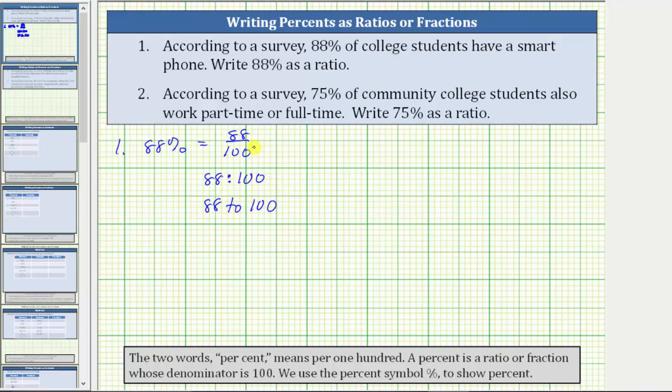However, we simplify ratios and fractions by simplifying out the greatest common factor, other than one, between the numerator and denominator. The greatest common factor between 88 and 100 is four. To simplify, we divide 88 by four, and we divide 100 by four. 88 divided by four is equal to 22. 100 divided by four is equal to 25.